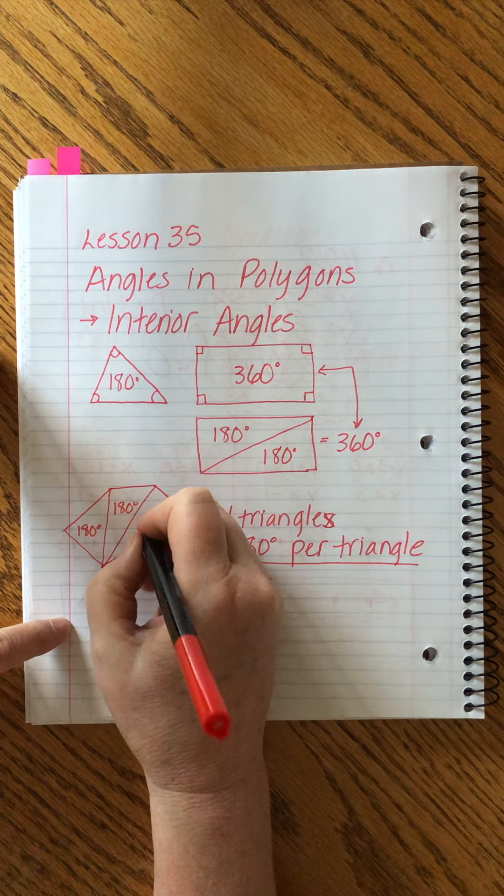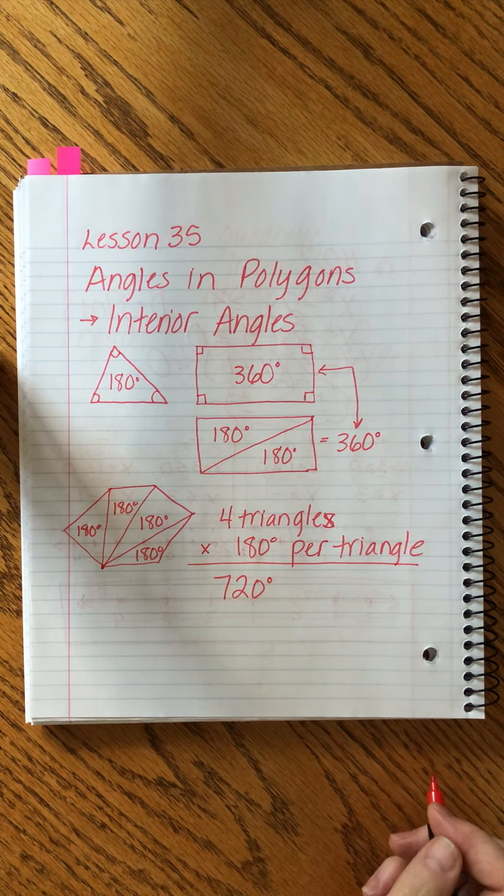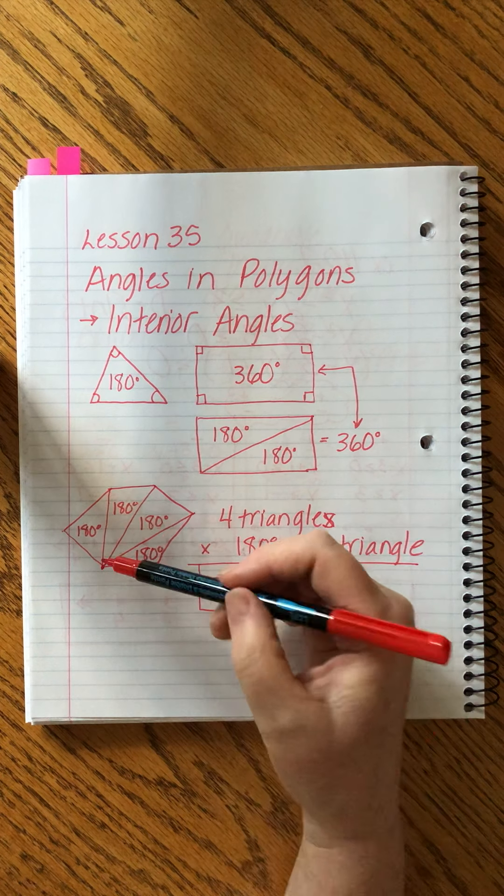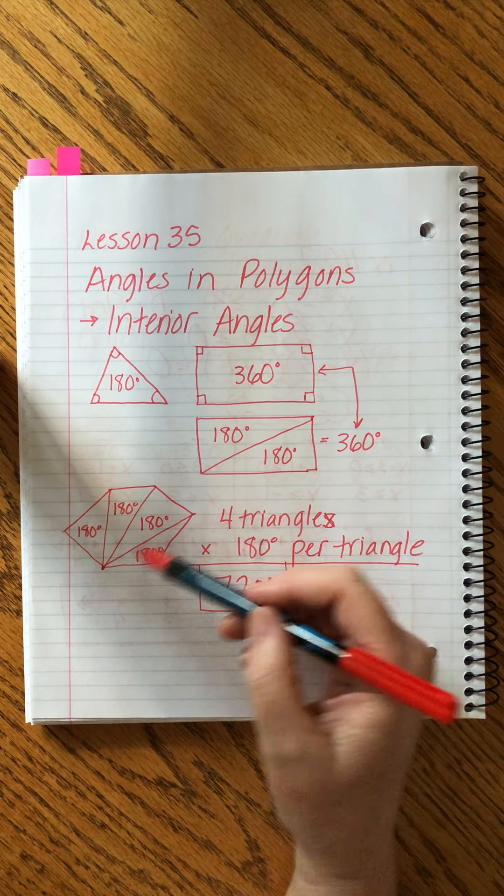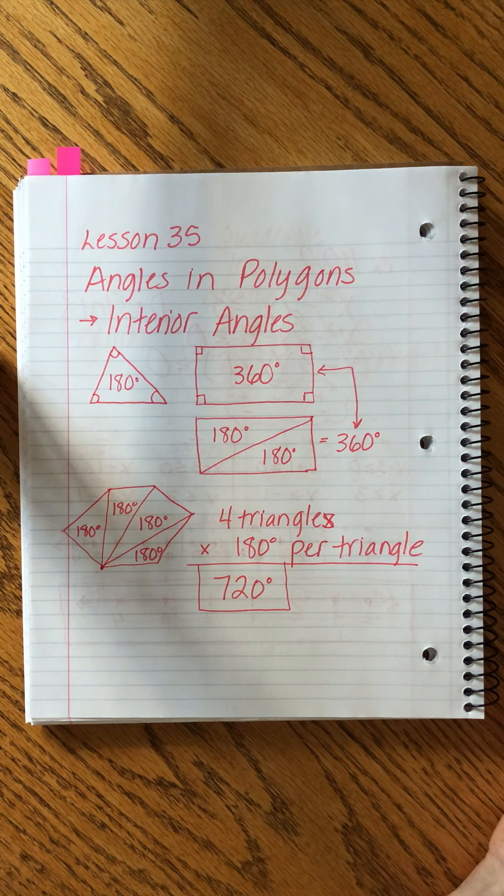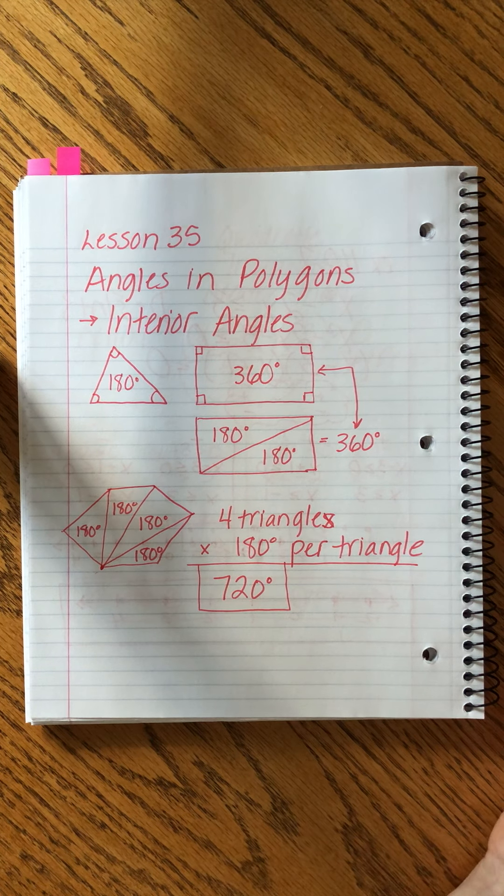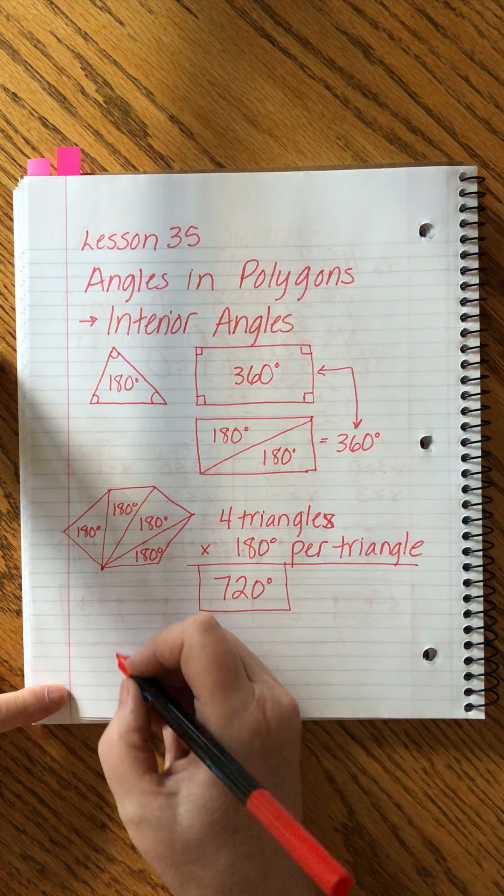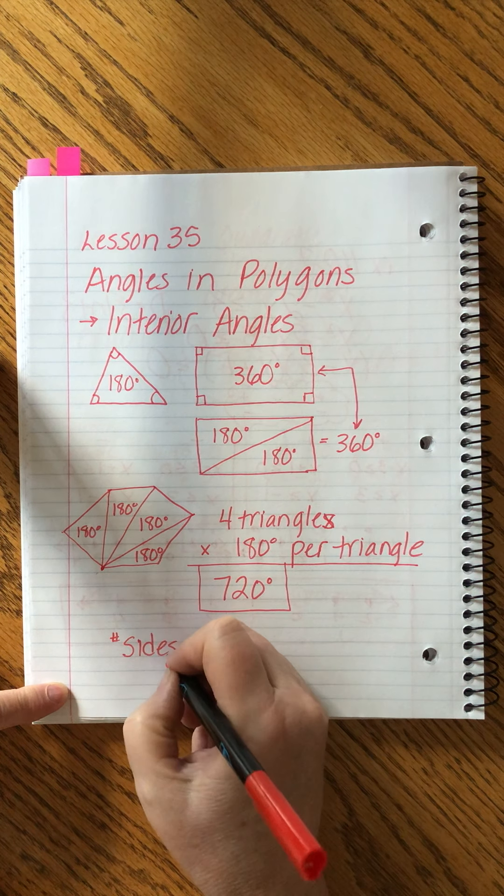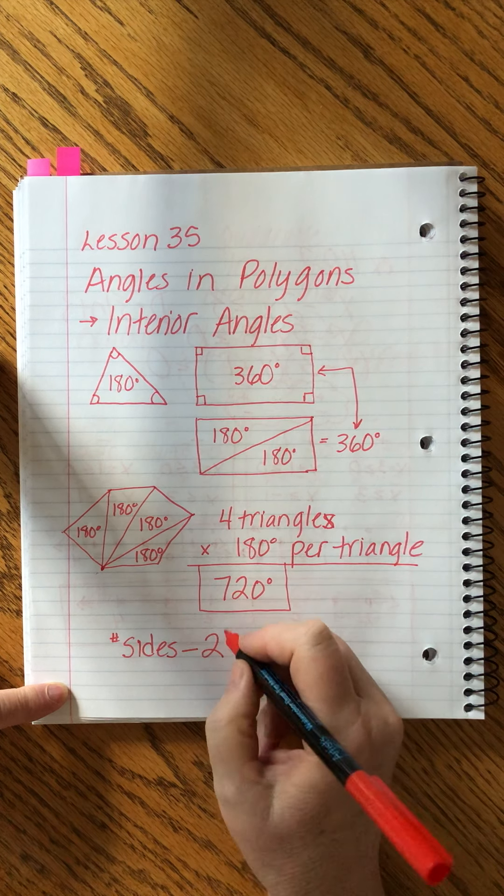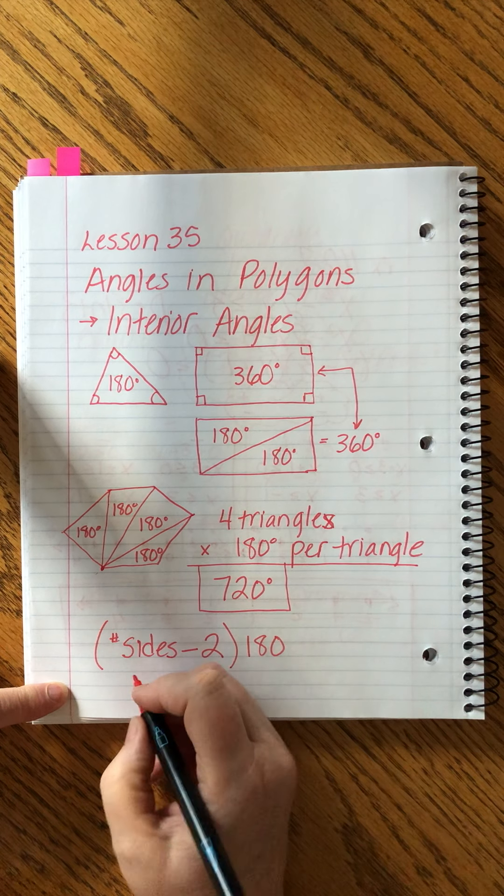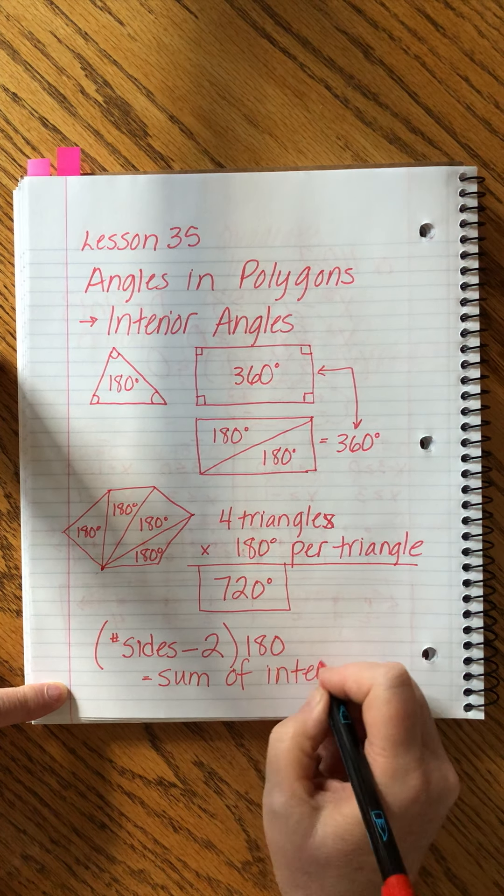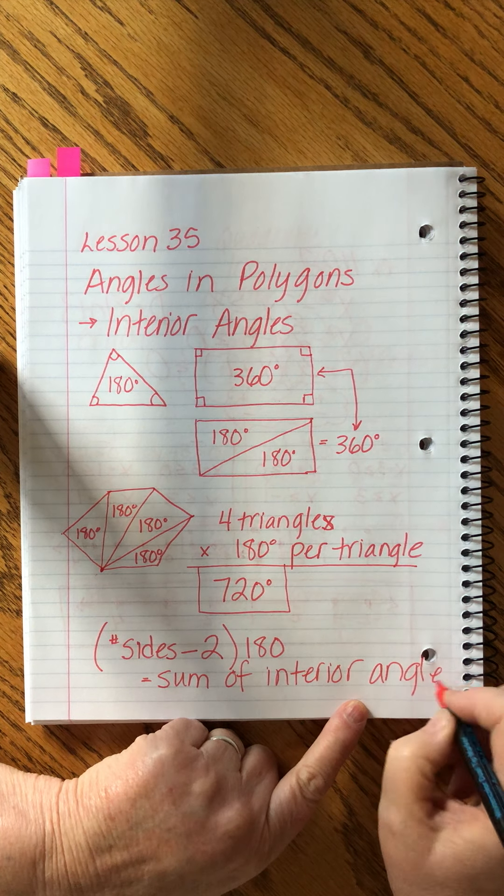We can think of it this way too. Every single one of these triangles is worth that many angles. So it's very easy if we can draw the shape and then divide it up into triangles, then we can multiply each triangle. But what if it's like a 12-sided object? Do we really want to try and draw a 12-sided object? Not really. So what we can do is we can take this little formula and we can turn it into a bit of a rule.